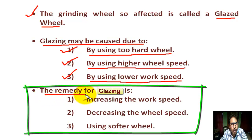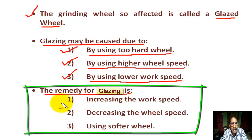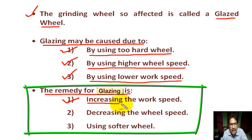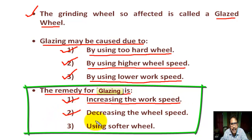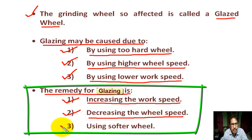The remedies for glazing are: number one, by increasing the work speed; number two, by decreasing the wheel speed; number three, by using a softer grinding wheel.